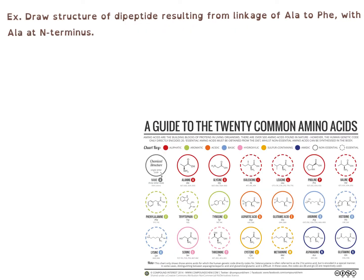Now let's apply this general information toward a specific problem: draw the structure of the dipeptide that results from linking alanine to phenylalanine, with alanine at the N-terminus. In other words, alanine is the amino acid that will have the unreacted amino group. To solve this problem, we can apply our chart of the 20 standard amino acids, finding alanine (ALA) and phenylalanine (PHE). We can see phenylalanine located as one of our aromatic amino acids.